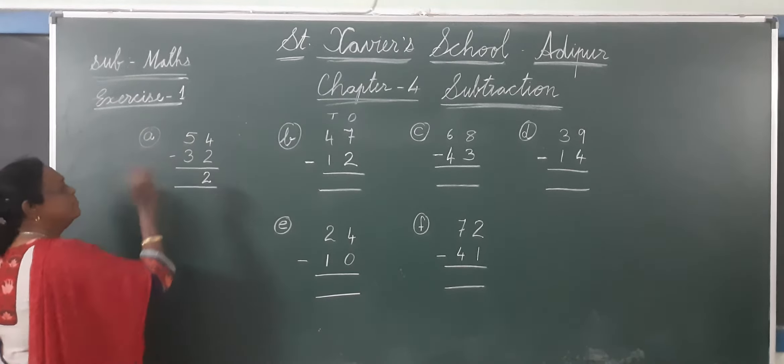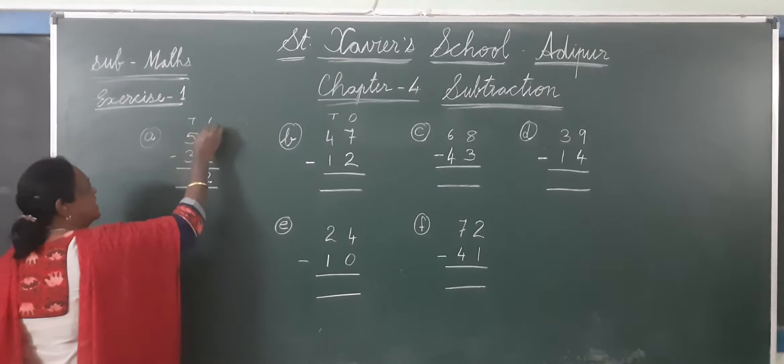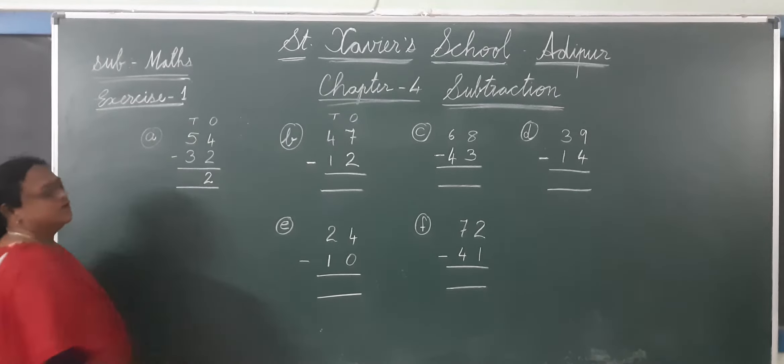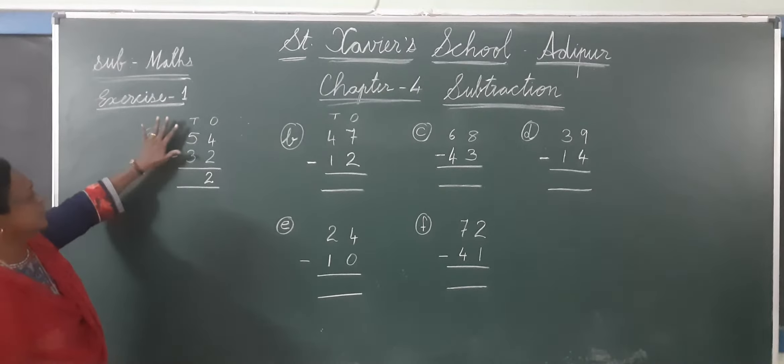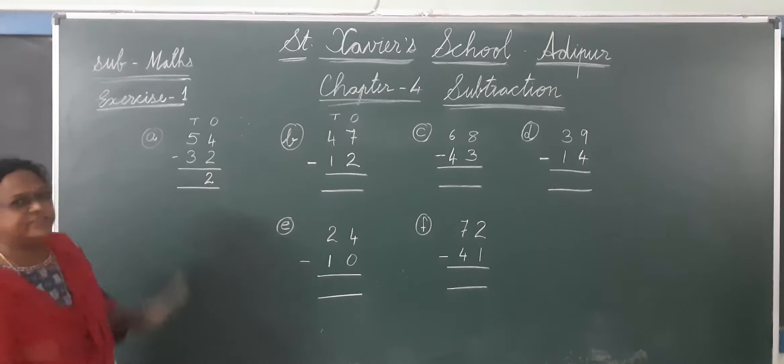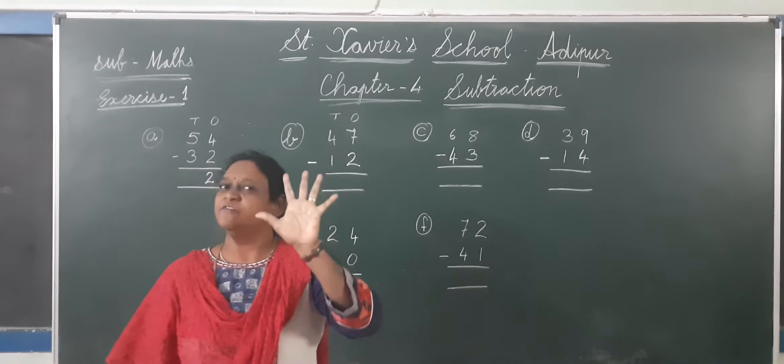Now this is 5 minus 3. First, we have to start with ones, then we have to start with tens. Now this is 5 minus 3. So in one hand we have how many fingers? 5.